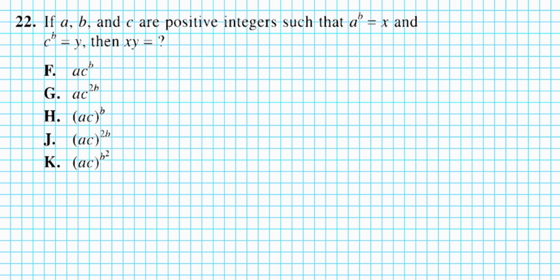Let's take a look at problem 22. It reads: if a, b, and c are positive integers such that a to the b is equal to x and c to the b is equal to y, then xy is equal to what?